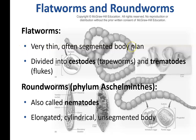Flatworms are really skinny and flat. The most common thing people think of are tapeworms, which have segmented bodies. The little proglottids — the further away from the head, the more mature they get and the more fertile eggs they have in them. The eggs can then be dispersed throughout the environment and grow to be more flatworms.